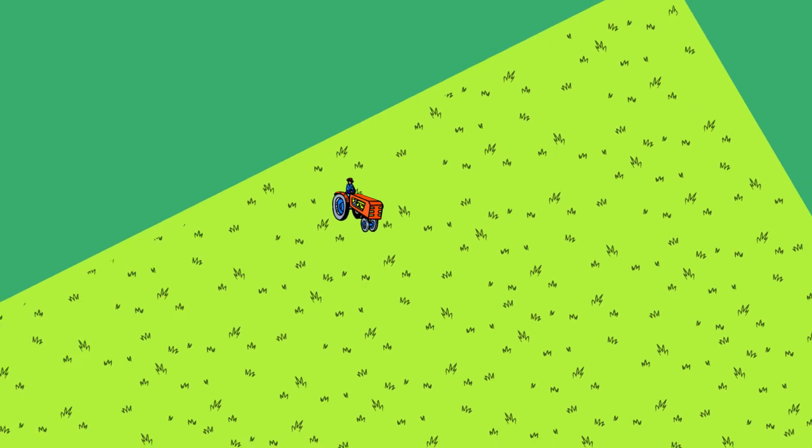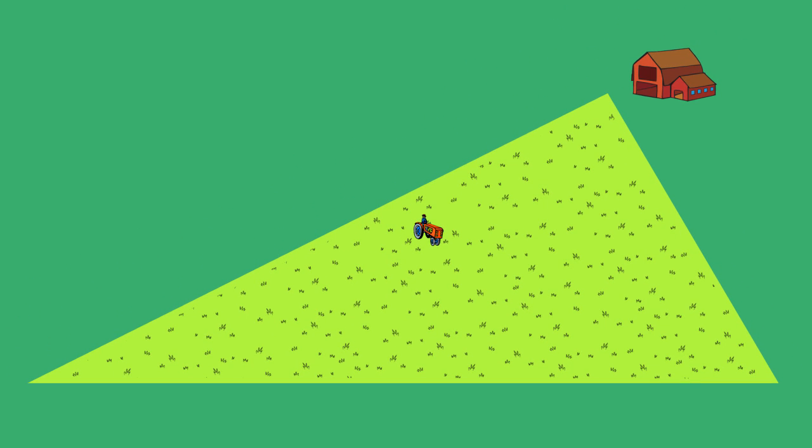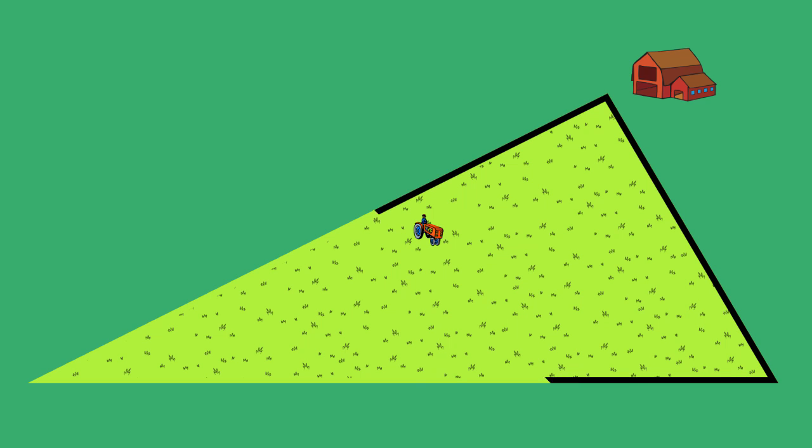Here is a real life application of cosine law. A farmer has a field in the shape of a triangle. The farmer has asked your class to build a fence for his farm.